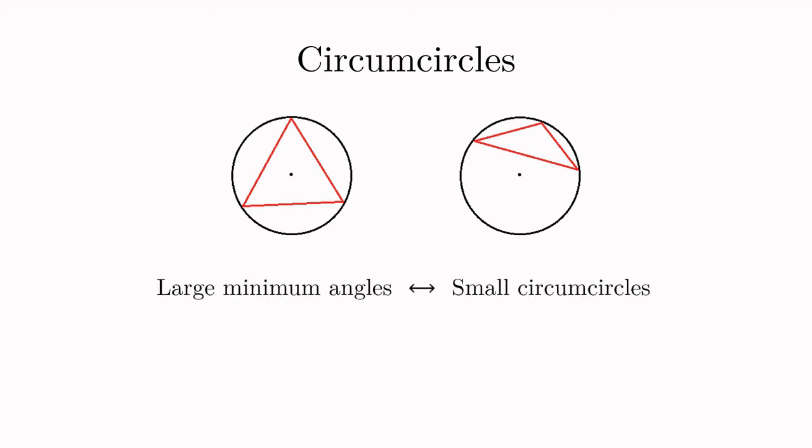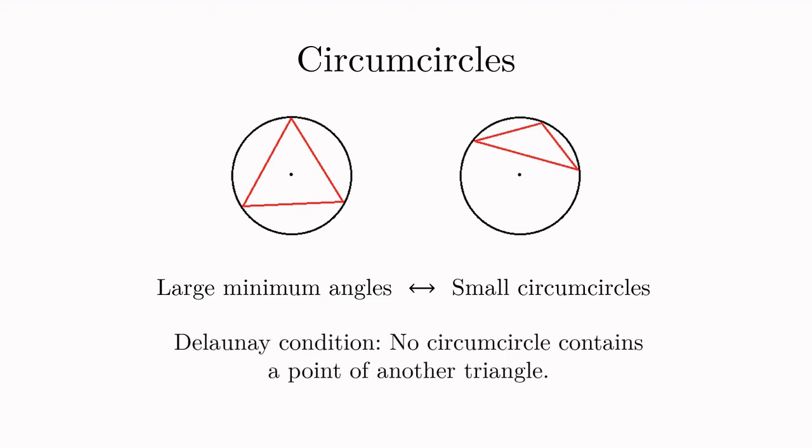To quantify these angles we can consider so-called circumcircles. Let's look at a generic triangle. Its circumcircle is the unique circle which passes through all of its vertices. Let's look at another example. Here the center of the circumcircle actually lies outside of the triangle itself and the area of the circumcircle is much greater compared to the area of the triangle than in the previous case. So as a rule of thumb we can say that large minimum angles in a triangle correspond to small circumcircles relative to the area of that triangle. This motivates the definition of Delaunay triangulations which have to satisfy the condition that no circumcircle contains a point of another triangle. Take a moment to make sure that it's clear what this condition is supposed to say.